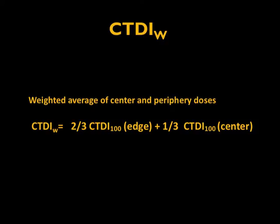Because of this, the physicist introduced another term called CTDI weighted, which is a measurement on the phantom taking two-thirds of the value at the edges and one-third of the value at the center, to arrive at what is called CTDI weighted.